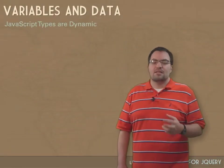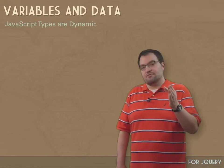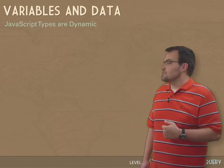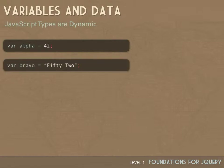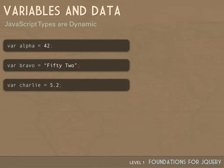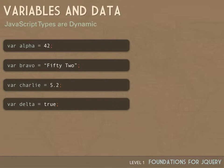Variables in JavaScript are dynamic — we don't declare a certain type. JavaScript will infer the type on the fly. Variable alpha is 42 — no symbols, just the digits and a semicolon, so that's an integer. Bravo is '52' with quotes, so it's a string. Charlie is 5.2 — JavaScript will notice the decimal point and infer it's a float. Delta is true — Booleans in JavaScript are true or false, reserved words, all lowercase: T-R-U-E or F-A-L-S-E, no symbols.